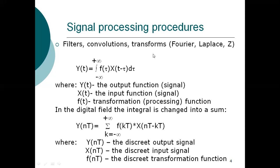Here y(t) is the output function — the signal after processing. x(t) is the input signal, the functional input signal. f(t) is the transformation or processing function. For example, if x(t) is the input given at five hertz of frequency, and after processing the condition given to the system is to increase that frequency, then the input frequency of five hertz has to be increased to ten hertz and the output signal needs to be processed.